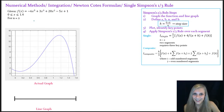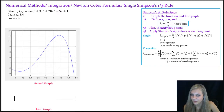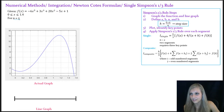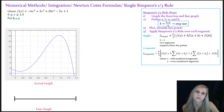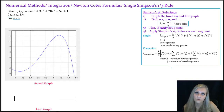Let's go ahead and get started with this example. This is my given equation and my bounds of integration, and I'm going to have two segments. This is really important because in order to use the Simpson's one-third rule, you have to have a minimum of two segments, or if you have more than two segments, it has to be a multiple of two.